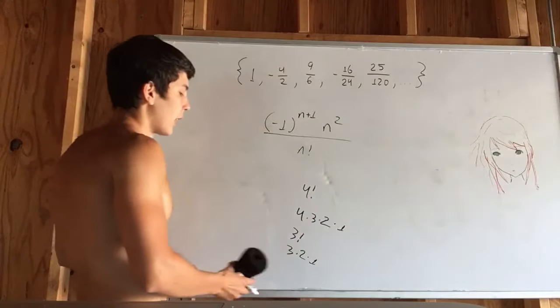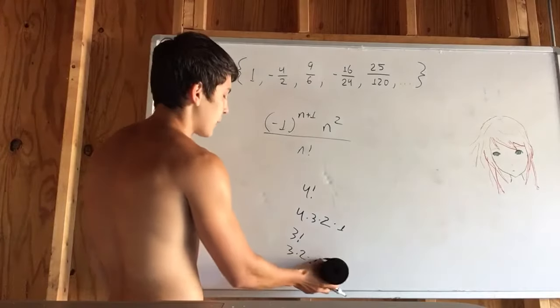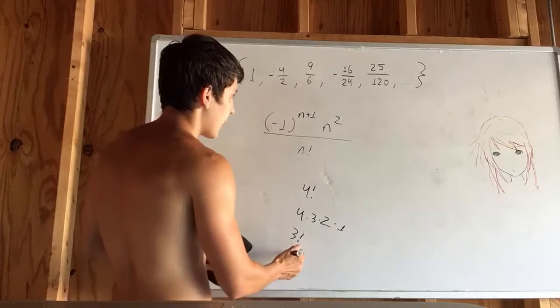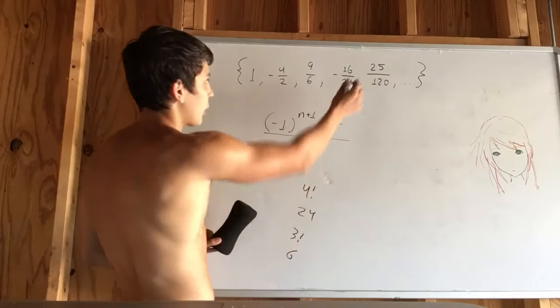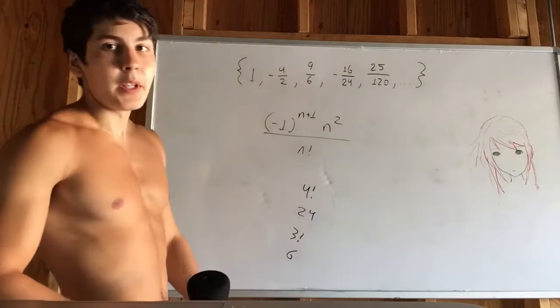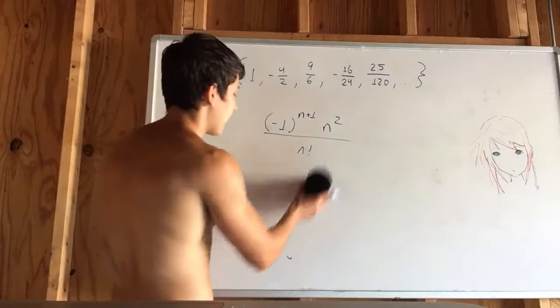So clearly, these are the values corresponding, because 3 times 2 times 1 gives you 6, 4 times 3 times 2 gives you 24, and 5 factorial would give you 120, so that is n factorial.